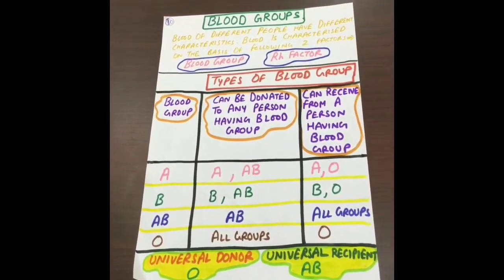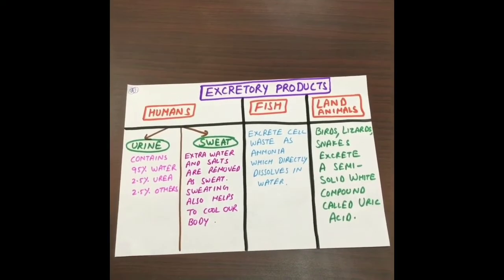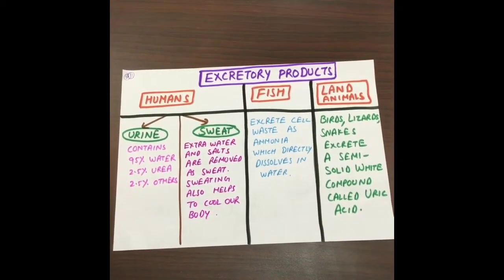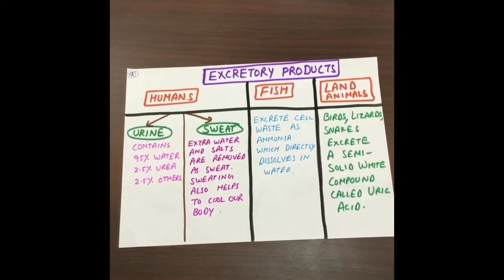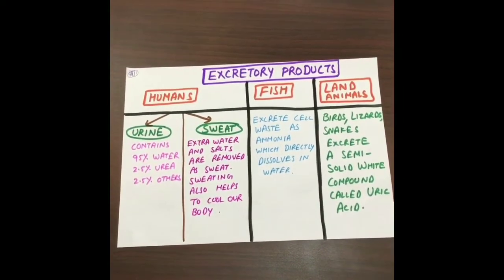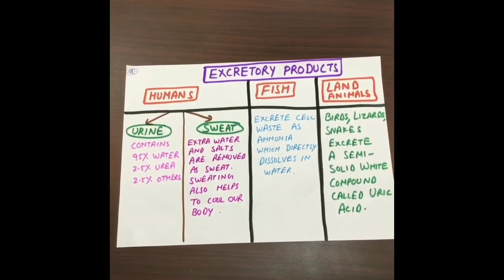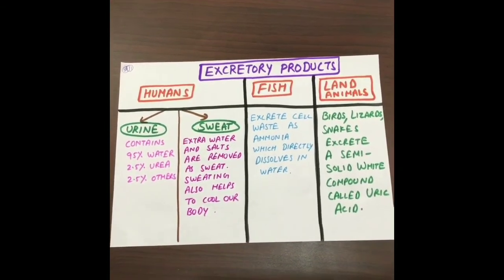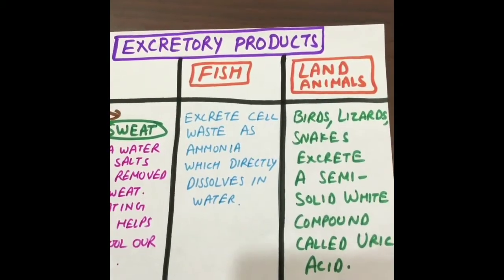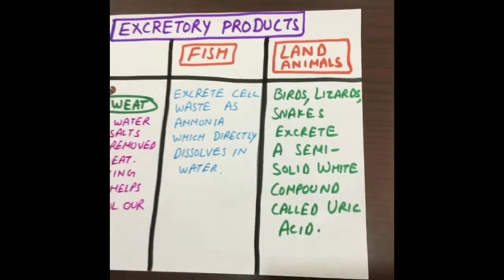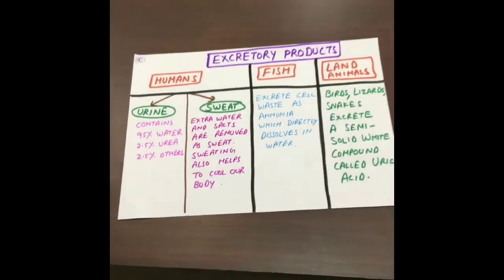Let us learn about the removal of wastes from a body. This process is known as excretion. Humans have two major excretory products: sweat and urine. Extra water and salts are removed as sweat, and sweating also helps to cool our body. Urine contains 95% water, 2.5% urea, and 2.5% other waste products. Fish excrete cell waste as ammonia, which directly dissolves in water. Land animals such as birds, lizards, and snakes excrete a semi-solid compound known as uric acid.